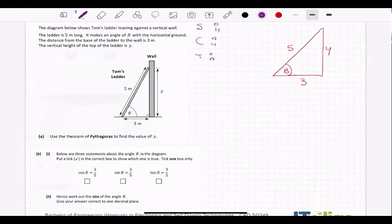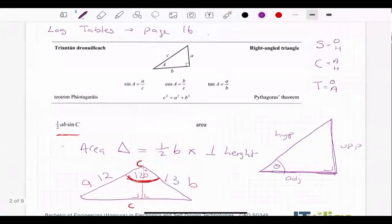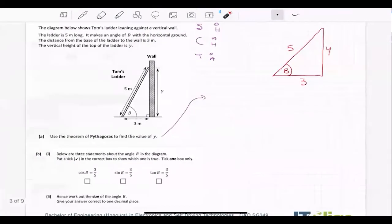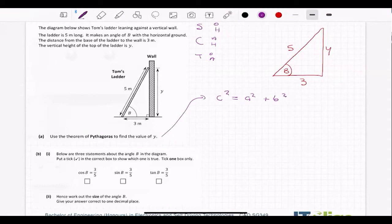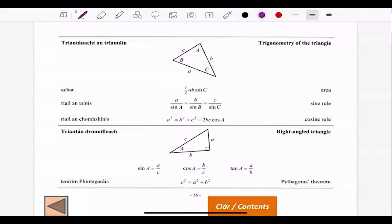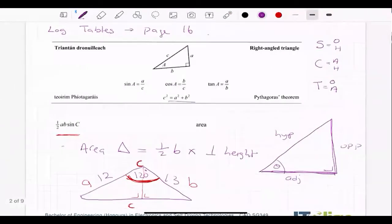So now use the theorem of Pythagoras to find the value of Y was the first question they asked. Do you want to give it a try and put the answer into the chat? So if you look at this one, use the theorem of Pythagoras to find the value of Y. So from the log tables, c squared is equal to a squared plus b squared. So that is the first thing you put down and you get marks for doing that. Of course you do, because you knew what the theorem of Pythagoras was.